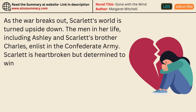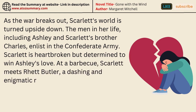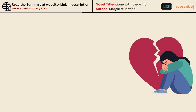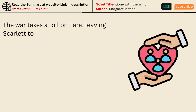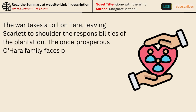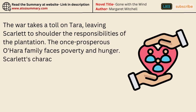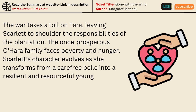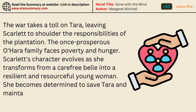Scarlett is heartbroken but determined to win Ashley's love. At a barbecue, Scarlett meets Rhett Butler, a dashing and enigmatic rogue who is instantly captivated by her. Scarlett and Ashley share a fleeting moment, but Ashley remains committed to Melanie. The war takes a toll on Tara, leaving Scarlett to shoulder the responsibilities of the plantation. The once-prosperous O'Hara family faces poverty and hunger. Scarlett's character evolves as she transforms from a carefree belle into a resilient and resourceful young woman, determined to save Tara and maintain her family's dignity.